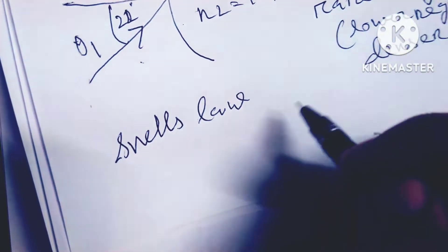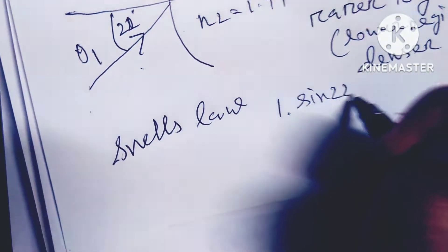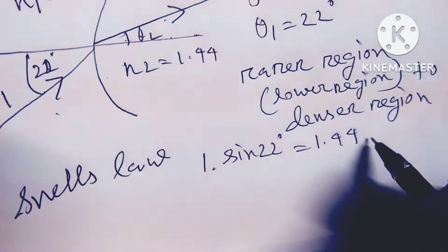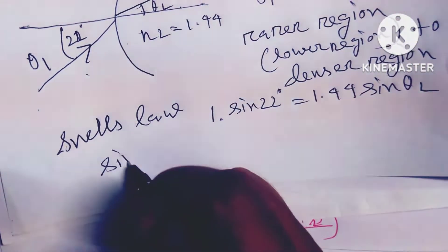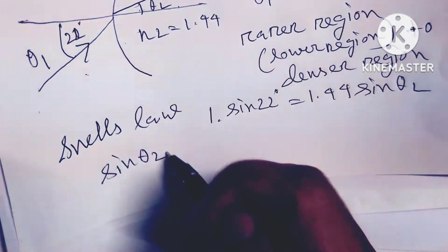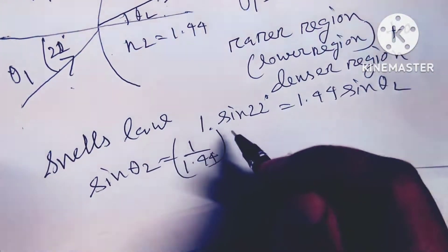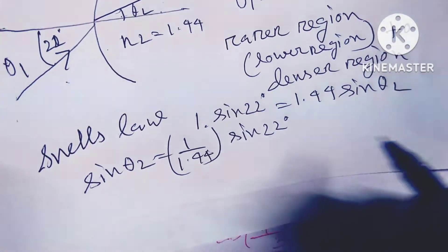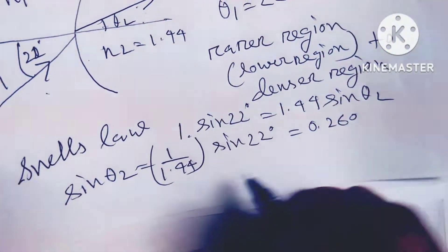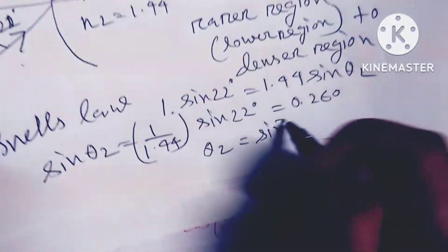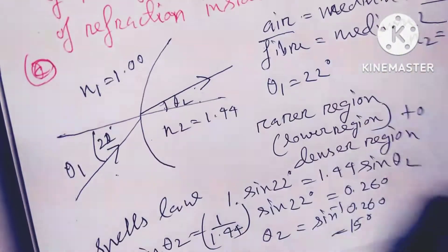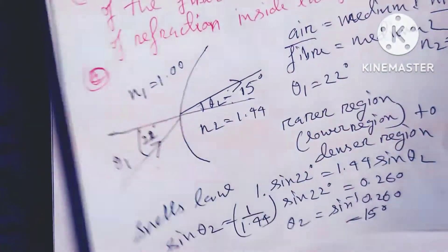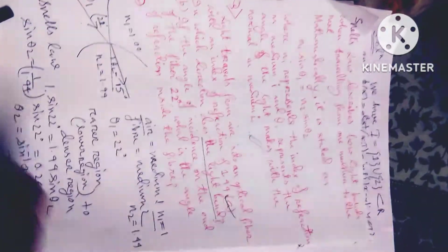Applying Snell's law: 1 × sin(22°) = 1.44 × sin(θ2). So sin(θ2) = (1 / 1.44) × sin(22°) = 0.260. Therefore, θ2 = sin⁻¹(0.260) = 15 degrees. Thanks for watching — please check the total notes and write them down if you want.